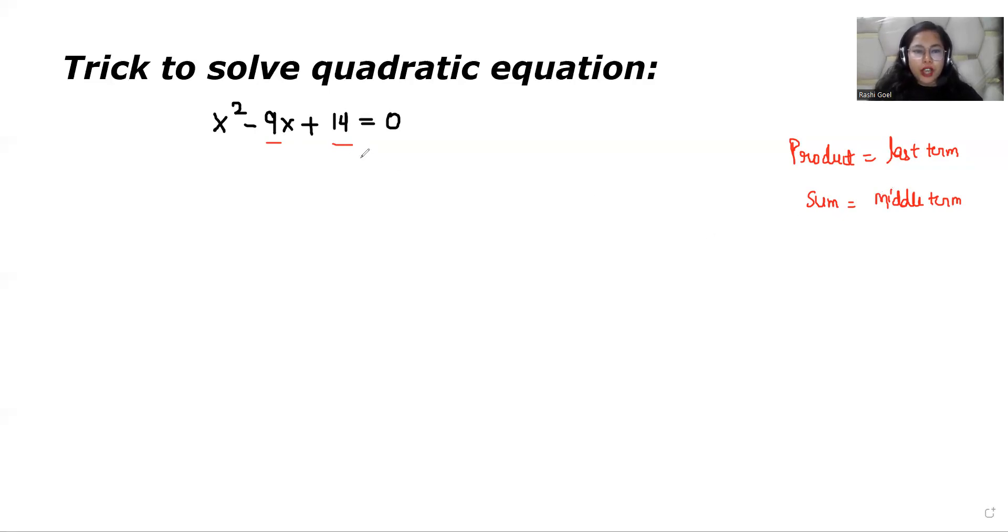So we have to check the last term factors that is 14. The factor of 14 is 1 and 14. So 1 times 14 is 14 but 1 plus 14 does not give us 9.